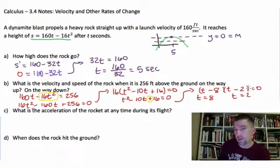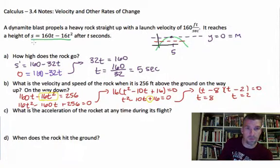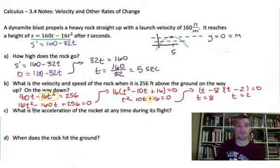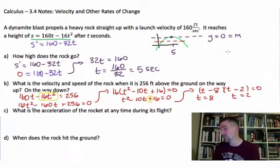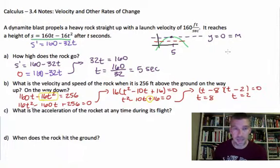So what is the velocity and speed of the rock when it is 256 feet above the ground on the way up and on the way down? Well, that's at times of 8 and 2. So what do I do to finish this problem off? I come back over here to my equation for derivative. Let's just go ahead and write it again real bold where we can all see it. The derivative is 160 minus 32t. So once I get that part, then I just need to stick in 8 and 2 for t and do my math.